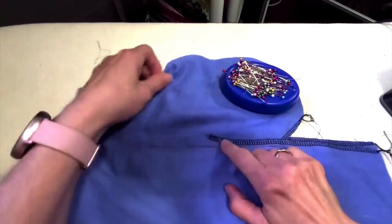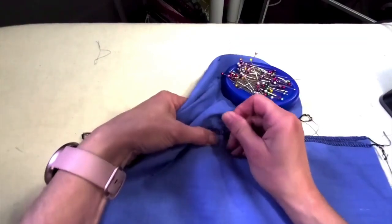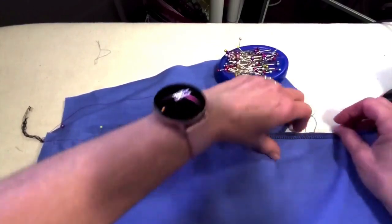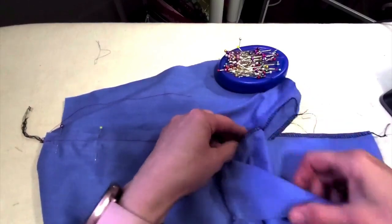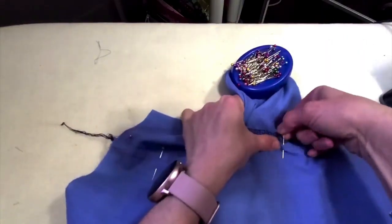Down here the notch got a little hidden in my serging there. I can see it's right there, so I'm going to pin there and again just making sure that my seam lines of the pocket are right on top of each other.